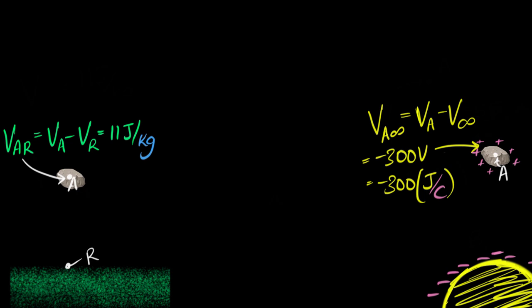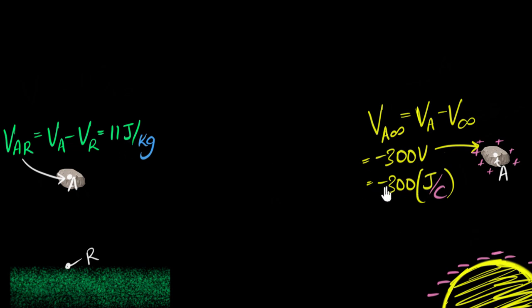We've talked more about this in our previous videos on introduction to electric potentials and potential differences, so if you need a refresher, feel free to go back and check those out. But the goal of this video is to figure out how to calculate these values — how did we know this was positive 11, and how did we know this was negative 300? So how do you calculate these potentials?